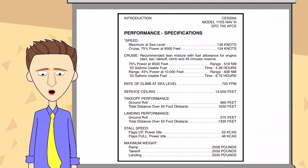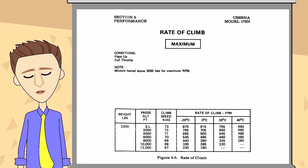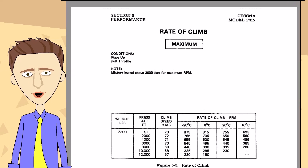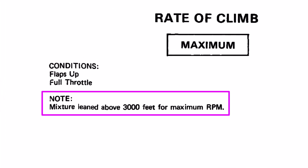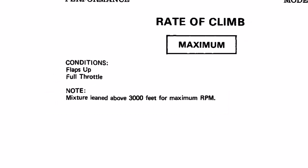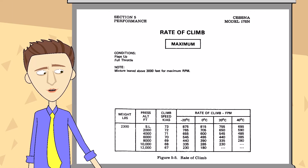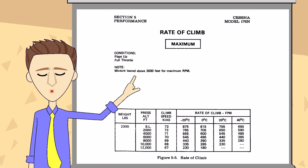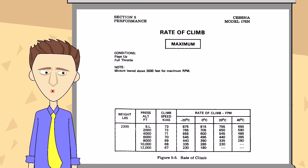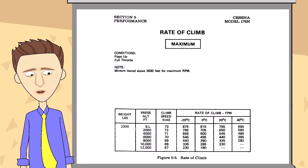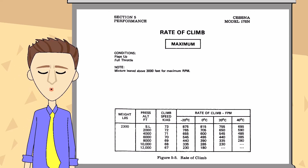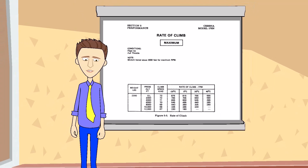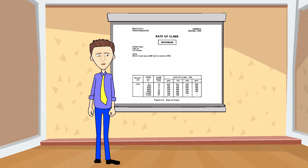Density altitude also comes into play when leaning the mixture during a climb. Many POHs recommend leaning the mixture at or above 3,000 feet for maximum RPM, as shown on this performance chart. That number is also a density altitude despite not being labeled as such. Keep in mind that I can also be at 1,000 feet MSL on a hot day and easily exceed 3,000 feet density altitude. So it's reasonable to say that any altitude found in a POH that's not paired with a temperature and not listed otherwise is a density altitude — but most pilots might not deduce this because they are not taught to think in terms of density altitude.